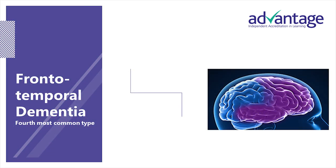Frontotemporal dementia, including Pick's disease, is one of the less common forms of dementia. The word frontotemporal refers to the two lobes of the brain damaged in this form — the frontal lobe and the temporal lobe. It is caused when nerve cells in the frontal and/or temporal lobes die and the pathways that connect them change. There is also some loss of important chemical messengers, and over time the brain tissue in the frontal and temporal lobe shrinks. Frontotemporal dementia is most often diagnosed between the ages of 45 and 65, considerably younger than the more common types.